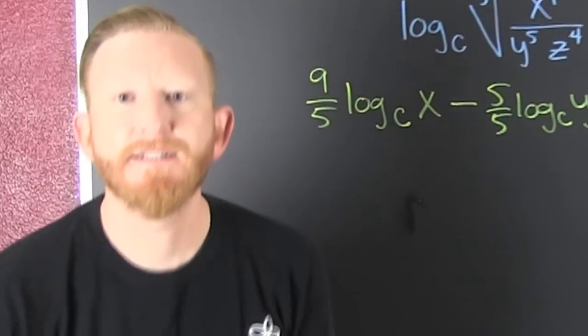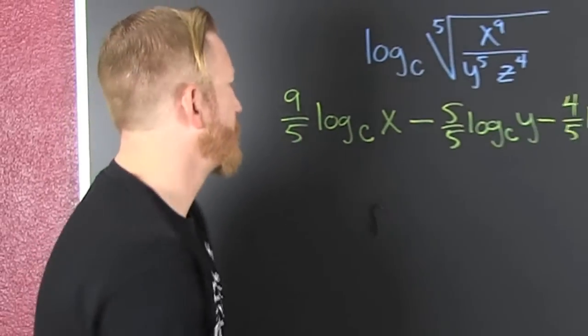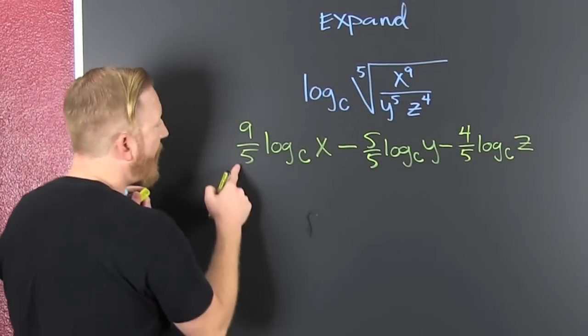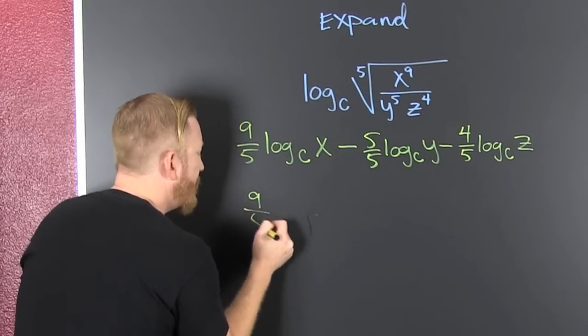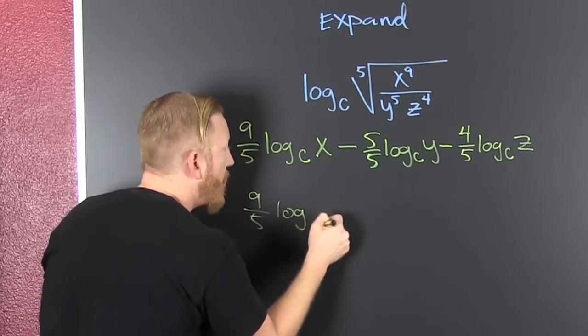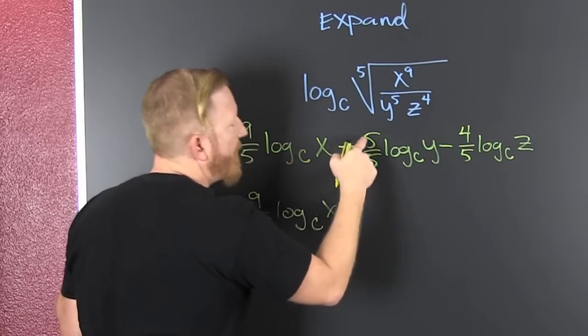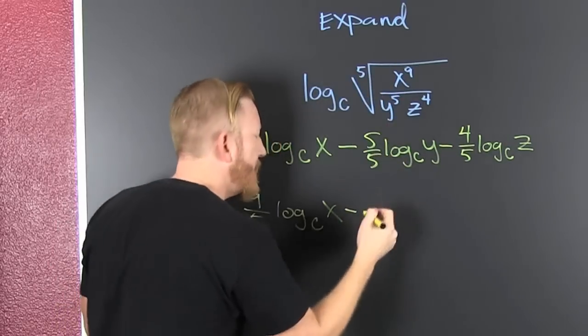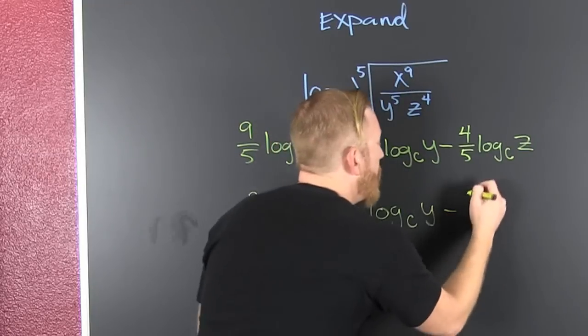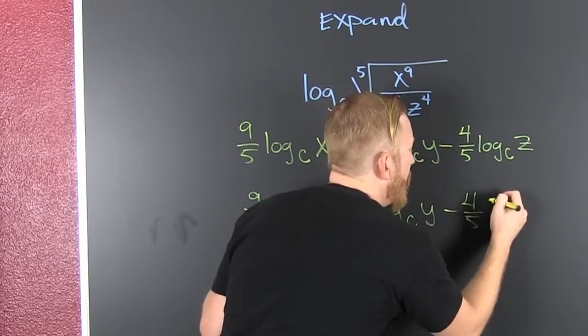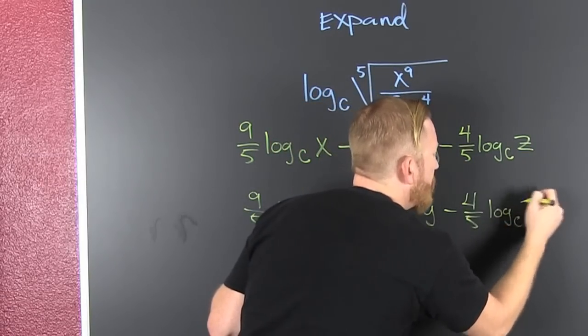Oh, we now we just have one last step. Finish him. I can't reduce this. So then that's nine fifths log base c of x minus five over five is one, not gonna write it, log base c of y minus four fifths log base c of z.